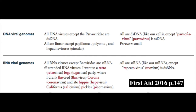All RNA viruses except Reoviridae are single-stranded RNA — remember that all are ssRNA like our mRNA, except reovirus, which is double-stranded RNA. The positive-stranded RNA viruses include togavirus, flavivirus, coronavirus, hepevirus, calicivirus, and picornavirus. You can remember these with the mnemonic: 'I went to a virus toga party where I drank flavored corona and ate hippie California pickles' — toga (togavirus), flavored (flavivirus), corona (coronavirus), hippie (hepevirus), California (calicivirus), pickles (picornavirus).